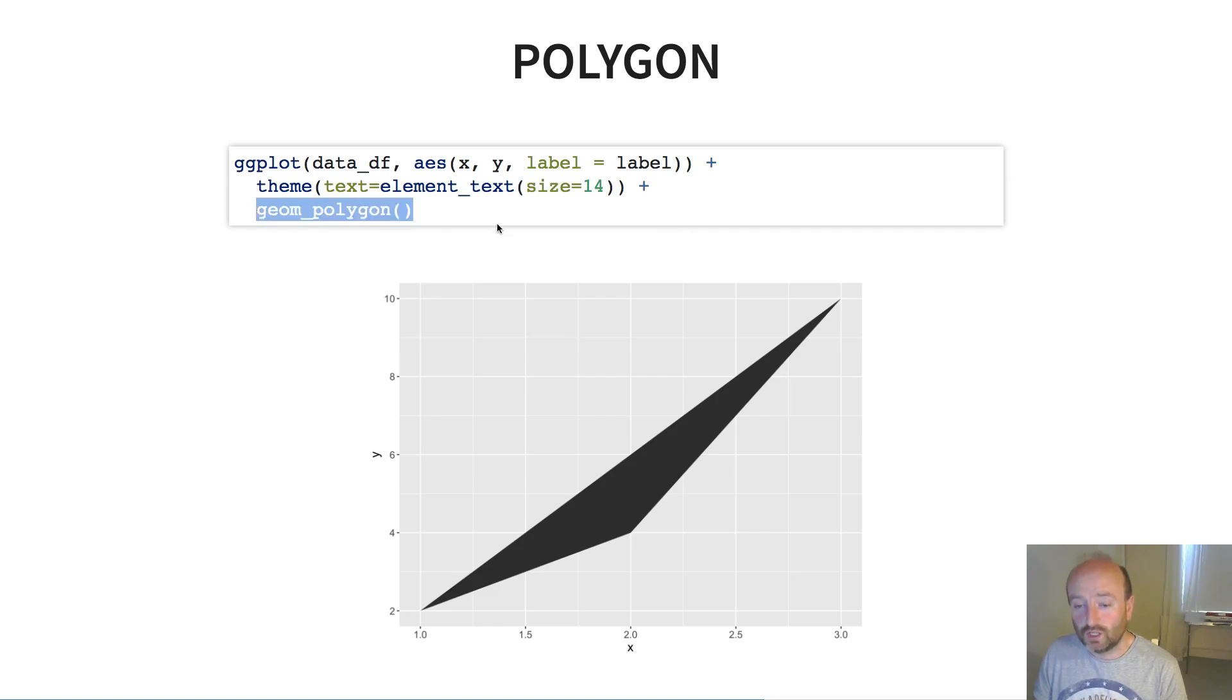I can also use more elaborate geoms here. So I can use geom_polygon, which unsurprisingly, what it does is it draws a polygon whose edges or whose corners are the individual data points.